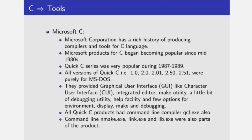They provided a character-based graphical user interface, integrated debugger, make utility, help facility, and other options for environment, display, make, and debugging. All Quick C products had a command line compiler called qcl.exe, command line nmake for the make utility, link for the linker, and lib.exe for the librarian. These were also part of the product.